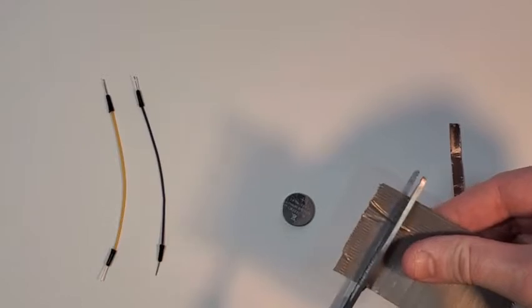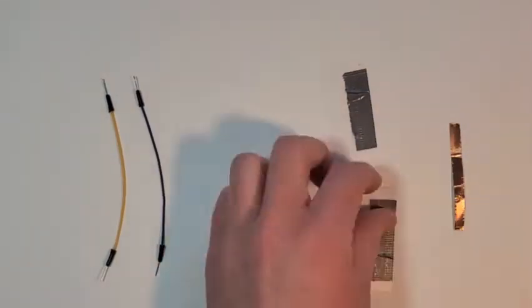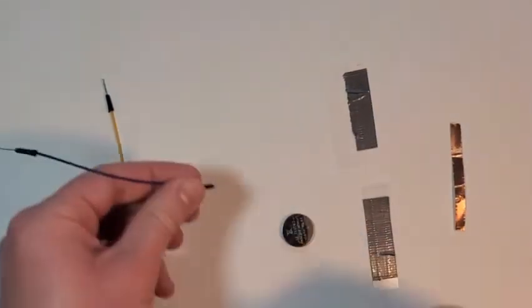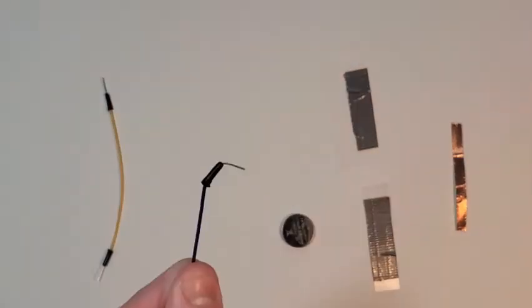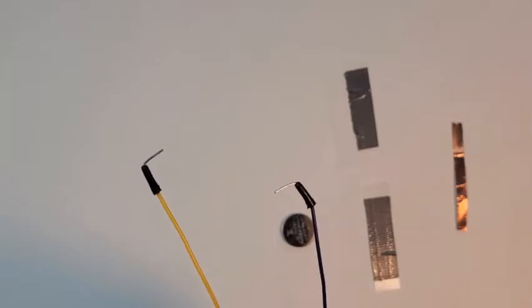Cut your duct tape into thin strips about half an inch wide or thinner. Now take your two wires with plastic ends and bend the tips of the wire as shown. Do the same for both wires.